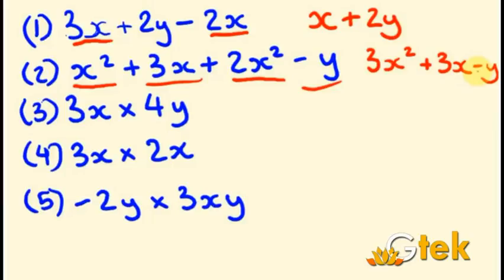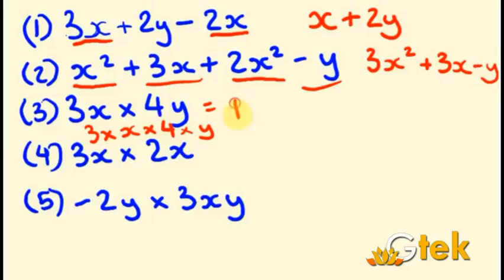Third equation: 3X into 4Y. There is only a single X and Y term. Expanding: 3 times X into 4 times Y. Multiplying the numbers first: 3 into 4 is 12, with 1X and 1Y. So the result is 12XY.